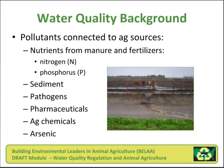Pollutants connected to agricultural sources can be nutrients from manure and fertilizers — primarily nitrogen and phosphorus — sediment, pathogens (which are disease-causing organisms), pharmaceuticals from veterinary drugs, agricultural chemicals, and other compounds such as arsenic, which is associated with parasite control in the poultry industry.